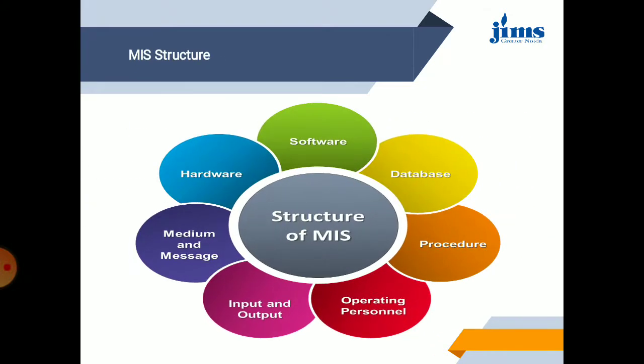Talking about the structure of MIS: it contains hardware — without hardware we cannot run software. MIS is basically a software that provides information. For prediction it uses machine learning, neural networks, and similar tools. The database is where we store our information — both present and past — and on the basis of that stored data the software analyzes it.